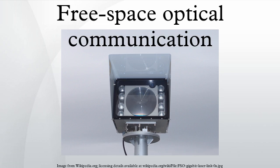In 1880, Alexander Graham Bell and his assistant Charles Sumner Tainter created the Photophone at Bell's newly established Volta Laboratory in Washington, D.C. Bell considered it his most important invention. The device allowed for the transmission of sound on a beam of light. On June 3, 1880, Bell conducted the world's first wireless telephone transmission between two buildings, some 213 meters apart.